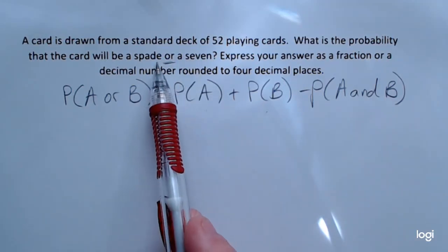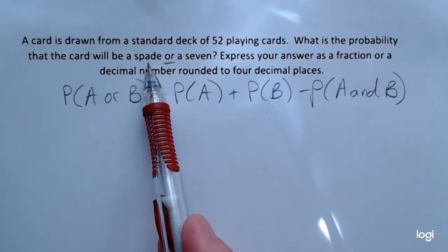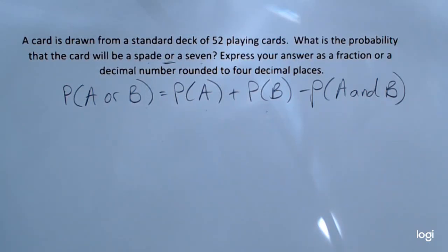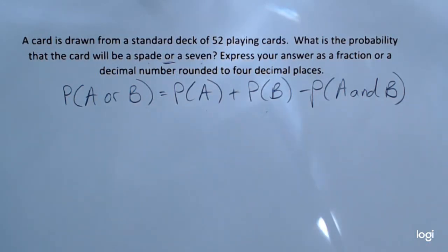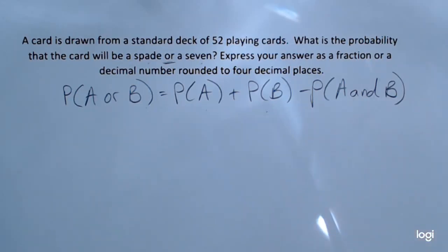Looking back at the problem, we need to determine whether or not getting a spade and getting a seven can occur at the same time. Well, yes, they can. We can get a seven of spades when we draw a card from a standard deck of 52. So this is a situation where our two events are not mutually exclusive and we're going to have to subtract out their intersection.